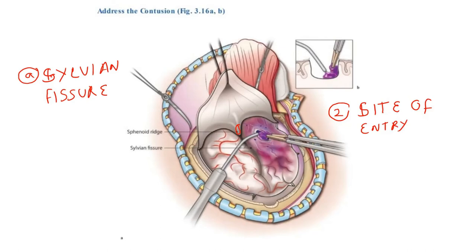Once you have identified the site of entry, cauterize the superficial vessels and the pia-arachnoid at the planned entry site using a number 15 blade. Approach the hematoma cavity in the subpial plane with a combination of gentle suction and bipolar electrocautery. Once you enter the hematoma cavity, use gentle suction to evacuate any liquid clot and solid clot in a piecemeal fashion. Continue evacuation until you see gliotic, normal, or edematous brain.